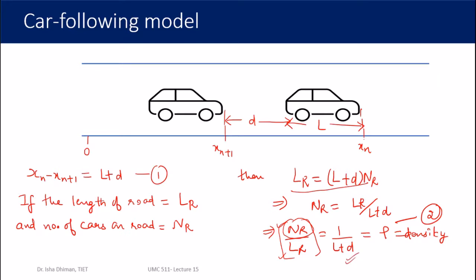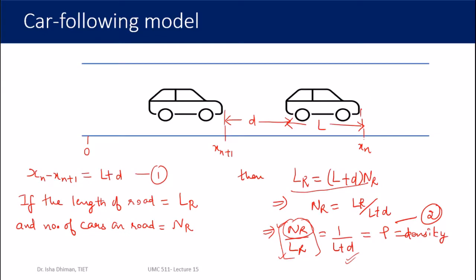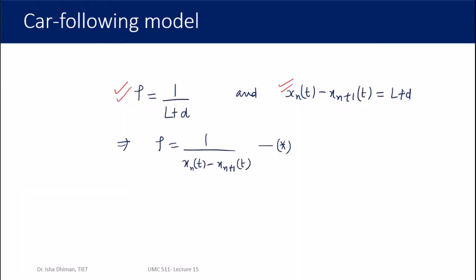So we are computing average density even within the car following model, which creates a connection between macroscopic and microscopic models. We have ρ = 1/(L + d), and from equation one, x_n(t) − x_{n+1}(t) = L + d. Combining these two, ρ equals one over the difference between the positions of the nth and n+1th vehicle at any time t. We need to remember this because we'll use it in further calculations.